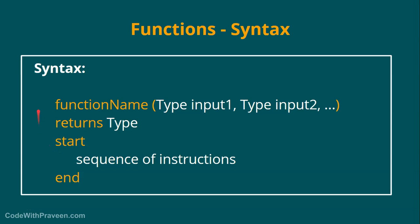To summarize: we have the function name followed by the set of input arguments, then the 'returns' keyword mentioning the return type, then the 'start' keyword, then the actual sequence of instructions to execute, and finally the 'end' keyword. This completes one function syntax.